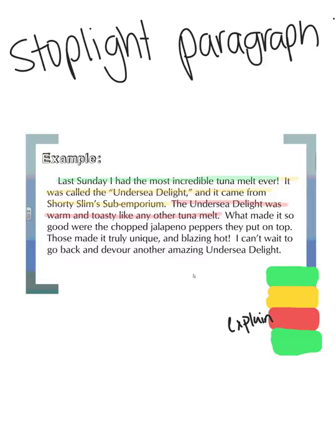Whenever you have a yellow, you must have a red to explain that example. Our next sentence: 'What made it so good were the chopped jalapeño peppers they put on top.' That is also an explanation of why this was the most incredible tuna melt. Sometimes this is where you would cite your citations or evidence that you got from research.